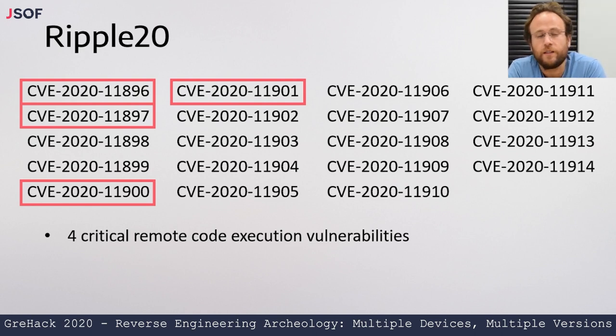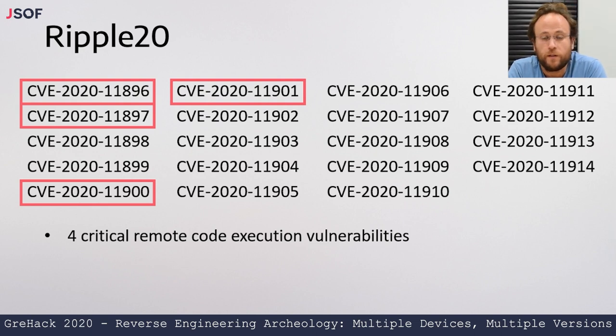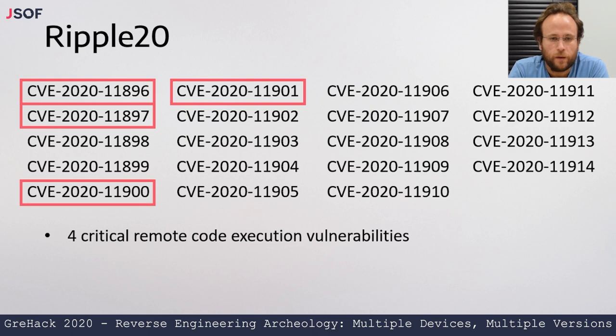For some devices, denial of service can be quite bad; for other devices, maybe not so much of an issue. So there are ranging effects, and ranging effects per device.